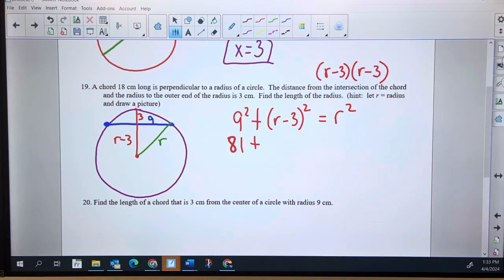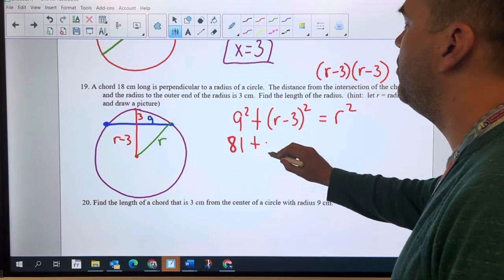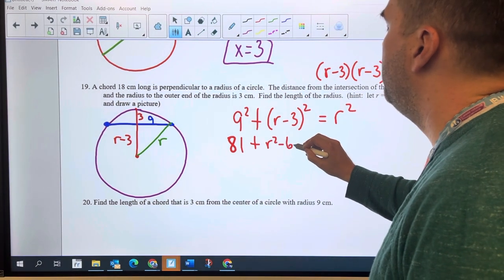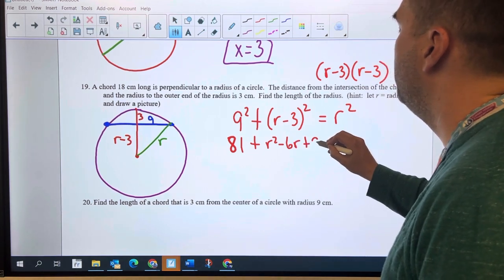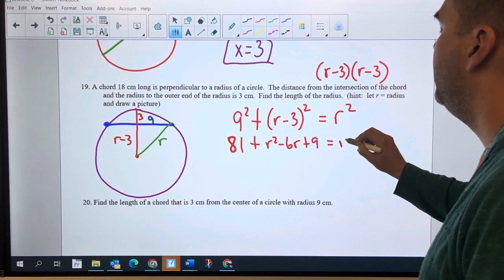So that means you've got to think about this as R minus three times R minus three. Maybe you distribute, maybe you use square, whatever you use to multiply this out. We're going to end up with R squared minus 6R plus 9 equals R squared.